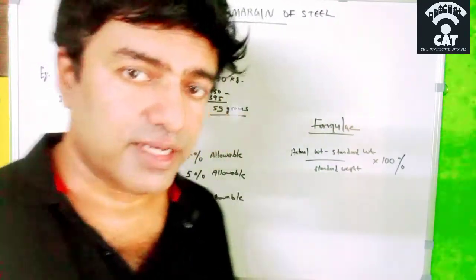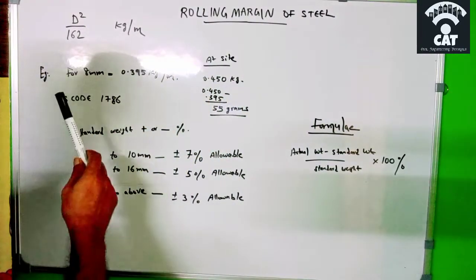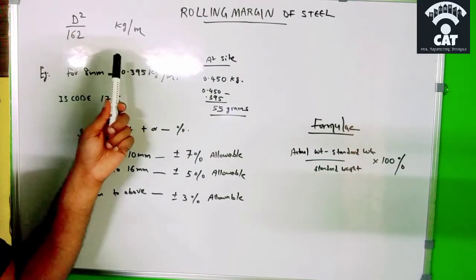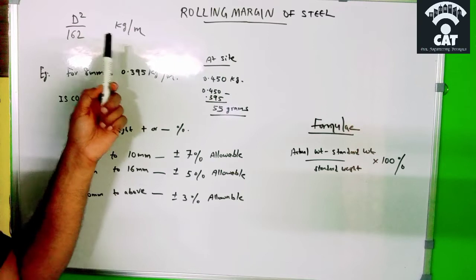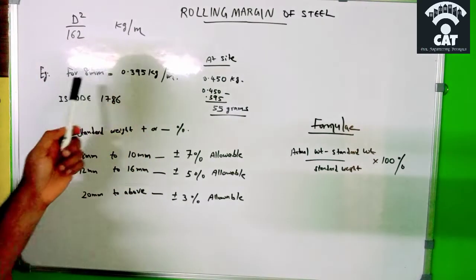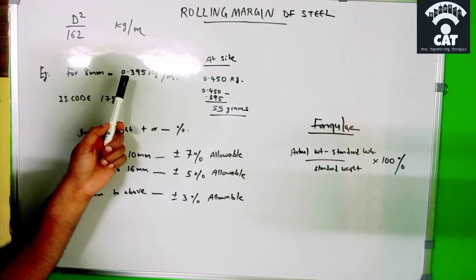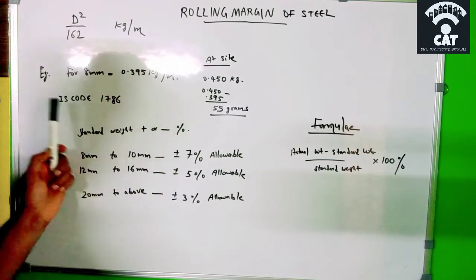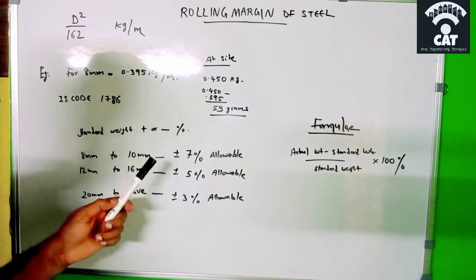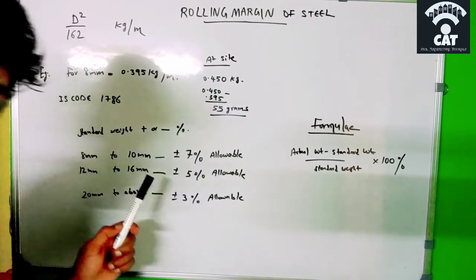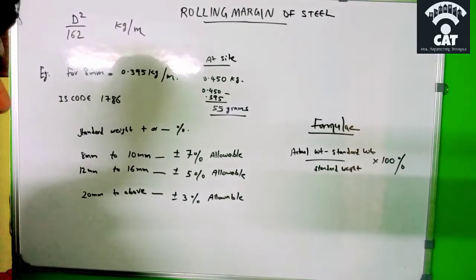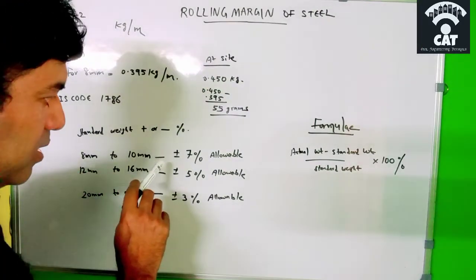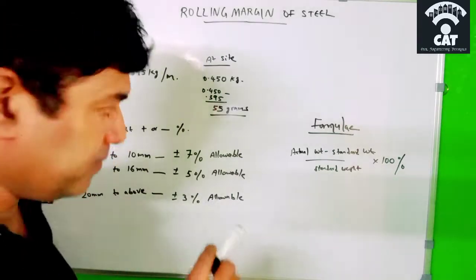So let us see in detail. The formula is D squared by 162, which equals the weight in kilogram per meter. For 8mm, the standard weight is 0.395 kilogram per meter. According to IS Code 1786, the standard weight can have an allowance of plus or minus a certain percentage. For 8mm up to 10mm steel bar, the allowance can be plus or minus seven percent.